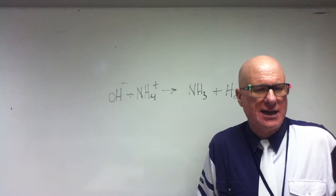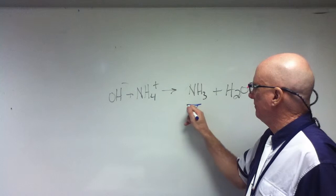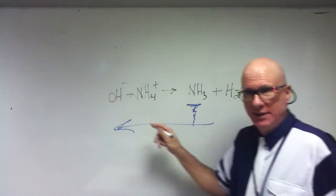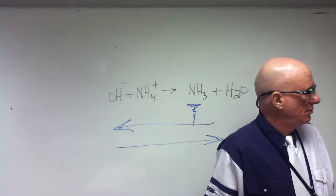A Brønsted-Lowry base would be an acceptor — that's the acceptor if I go the other way. So that's going to be a base, because it's going to accept a proton. And if it's going to donate a proton, you're going this way.